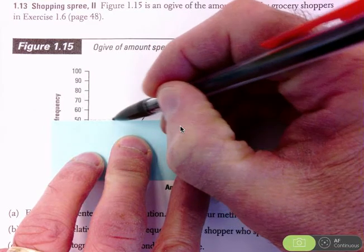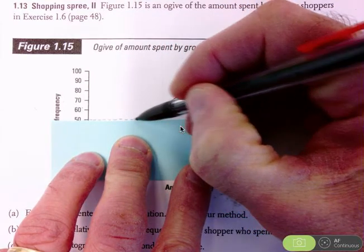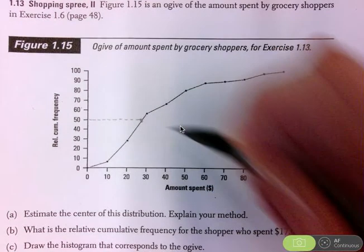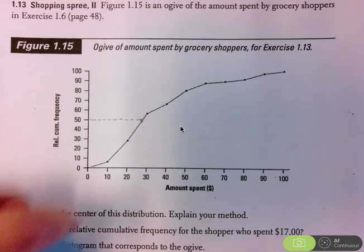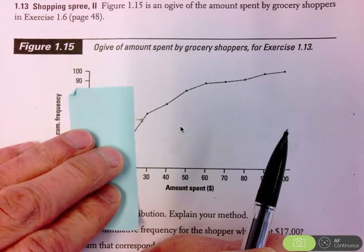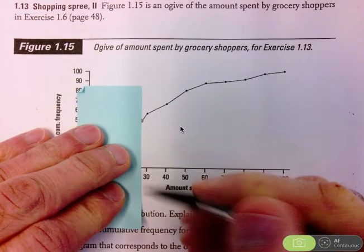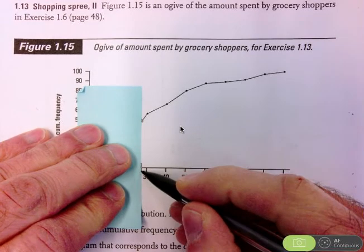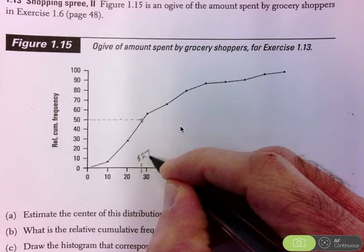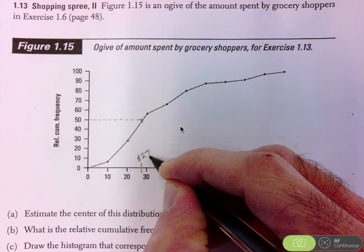There we go. So it takes me to this location on the ogive. So I can go straight down from that location and find that value on the horizontal axis. So that value looks like it's right around here. So this suggests that the median amount spent by shoppers is about $27.